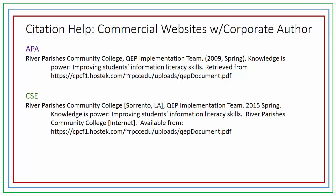For much of the other .com websites, the company is the corporate author. Start with the overall company name, then the division that actually authored the information. CSE asks for the location of the company, with the city and state in brackets. The date follows, then the title, and CSE requires the name of the homepage with 'Internet' in square brackets. The retrieval or availability statement follows with the URL.